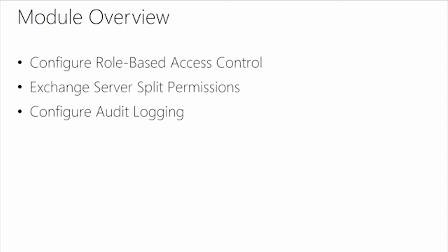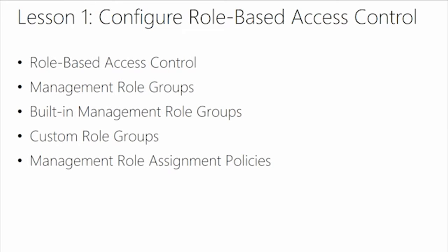Welcome back to Exchange Server 2016 Infrastructure. This is our last module, and in it we're going to cover the administrative security settings and audit logging — the things available for you to audit what your administrators are doing in Exchange. First, we'll cover role-based access and control, or RBAC — the way Exchange delegates access to users and administrators.